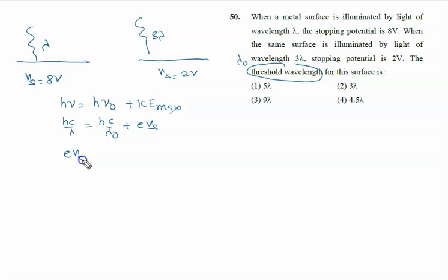So we can say eVs is 1 upon lambda, 1 upon lambda node. e constant, h constant, c constant. We can say eVs is proportional to 1 upon lambda minus 1 upon lambda node.